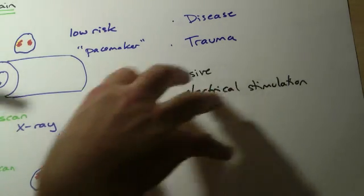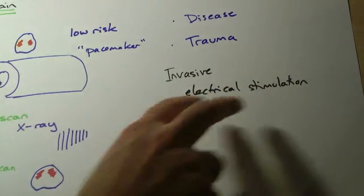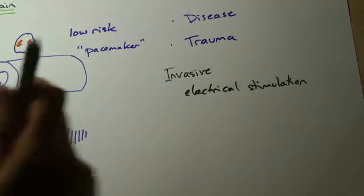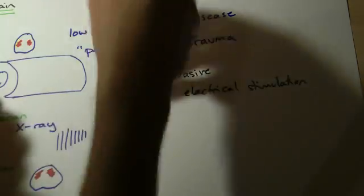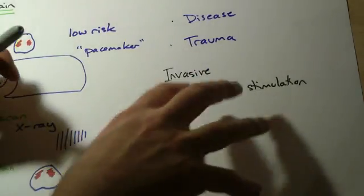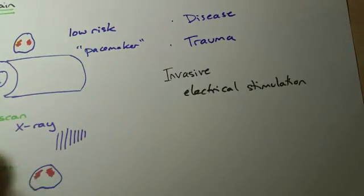In the case of open brain surgery, you can stimulate a certain area of the brain. The person might say that they're experiencing a smell or a certain memory or certain visual things, and so we can map the brain out in that way.